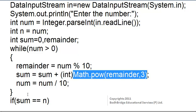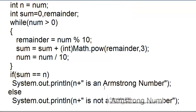After the while loop executes, we check if the sum value is equal to the value stored in the temporary variable n. If they are equal, the number is an Armstrong number; otherwise it is not. Within the while loop we are separating each digit, finding the cube of each digit, and storing the sum of those cubes in the variable sum. If that value equals the temporary variable, it means the sum of the cubes of the digits equals the number itself — so it is an Armstrong number.